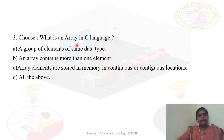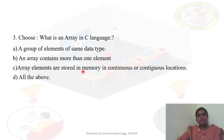What is an array in C language? We have used arrays in this program. An array is a group of elements of the same data type — correct. An array contains more than one element — yes, it has more than one element. Array elements are stored in memory in continuous or contiguous locations — yes, they are stored in continuous memory locations one after another. All of the above statements are correct, so the answer is D.